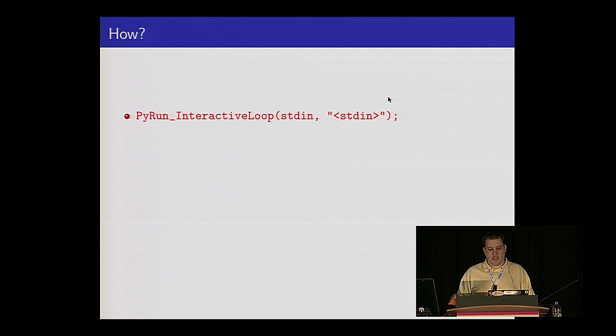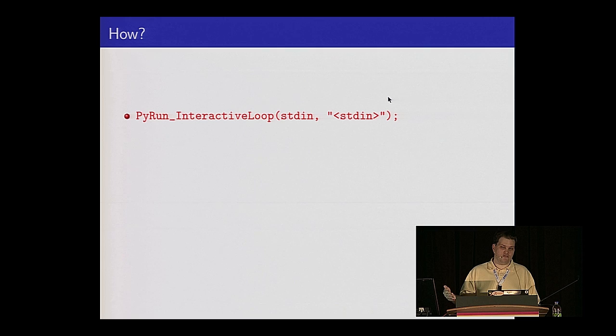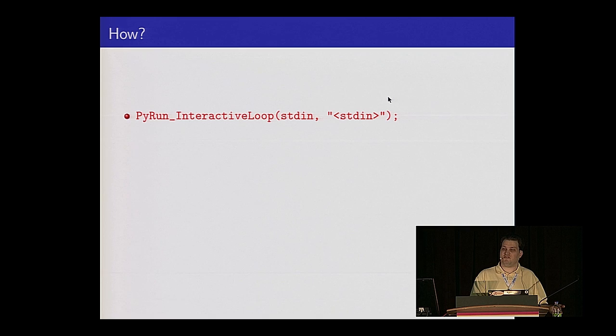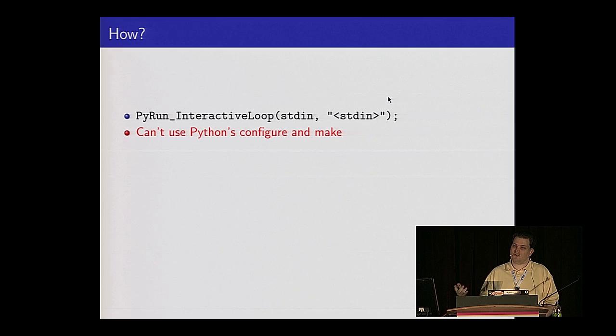You'll see in the traceback 'line x of stdin' — that will be the last item in your traceback, and then you might have a function that you called from some other module. But at the top level you're typing at this filename 'stdin.' That's the one function we wanted to run at the top level. What did we do to get there?